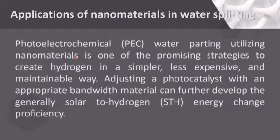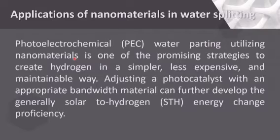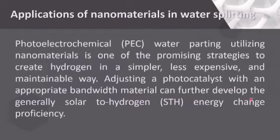There are several methods of water splitting, such as natural photosynthesis and artificial photosynthesis, and the majorly used artificial method is photoelectrochemical (PEC) water splitting. Water splitting using nanomaterials is one of the promising strategies to produce hydrogen in a simpler, less expensive, and sustainable way. Combining photocatalysis with an appropriate bandgap material can further improve the overall solar-to-hydrogen energy conversion.